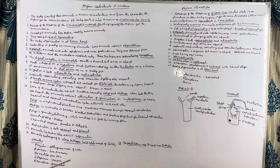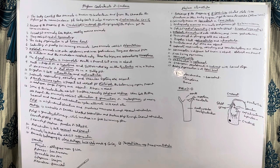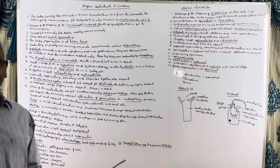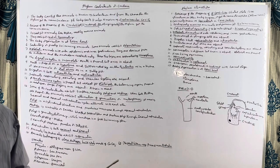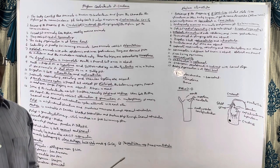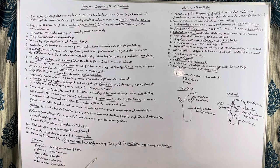In this phylum, respiratory, excretory, and vascular systems have not yet appeared. But for the first time, these animals have a simple network-like nervous system known as the diffused nervous system. Nervous and sense organs are absent, except for statocysts, which are organs of equilibrium or balancing present in the medusa, the free-swimming form.